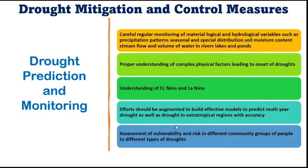Understanding El Niño and La Niña events is important, as these global events cause sea surface temperatures to warm slightly, initiating rainfall in certain areas but creating drought-like conditions in many others. There should be continuous monitoring, prediction, and forewarning of such global events. Efforts should also be made to build effective models to predict multi-year droughts as well as drought in extra-tropical regions like the Sahel with higher accuracy, as current predictions remain insufficiently precise.